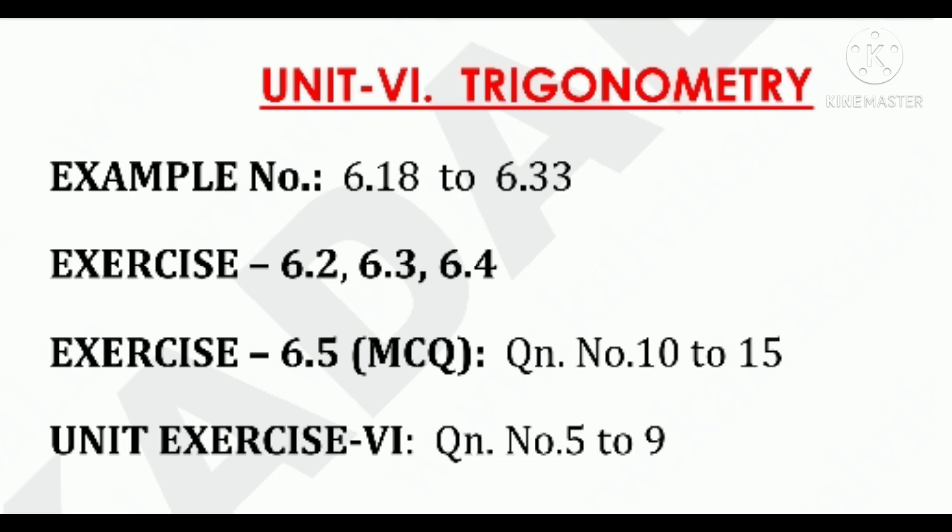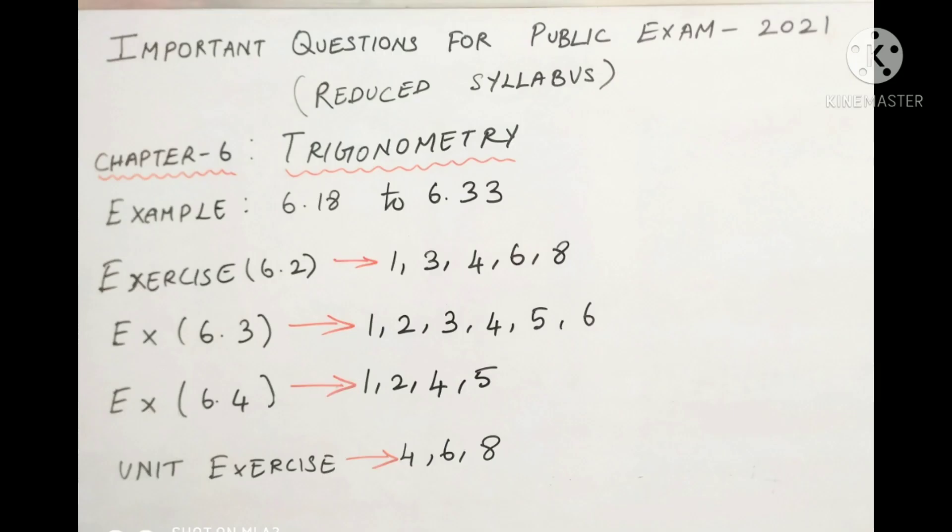Trigonometry: example 6.18, 6.33 full cover. Exercise 6.2, 6.3 and 6.4. Exercise 6.5 one word questions 10 to 15 cover. Unit exercise question number 5 to 9. Important sums: example 6.18, 6.33. Exercise 6.2: 1, 3, 4, 6, 8. Exercise 6.3: 1, 2, 3, 4, 5, 6. Exercise 6.4: 1, 2, 4 and 5. Unit exercise: 4, 6 and 8.